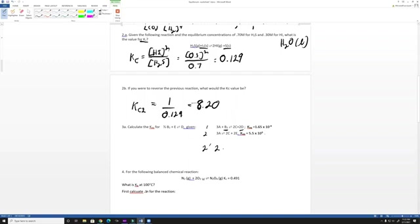So we can call this 2 prime: 2C plus 2E yields 3A plus B2 plus D. And this equilibrium constant, now that we flipped it, is now going to be 1 over 5.5 times 10 to the third. So that's what happens if we flip it.